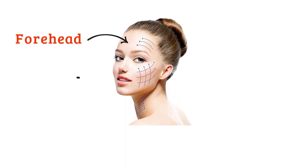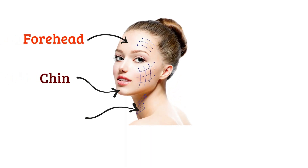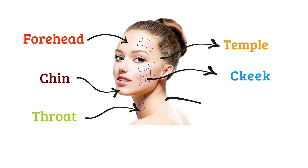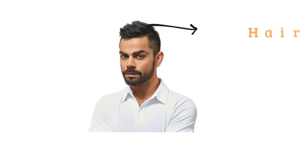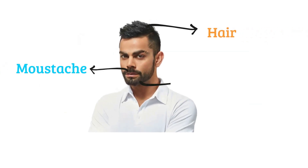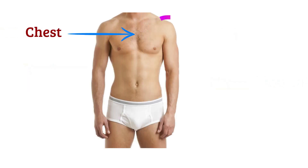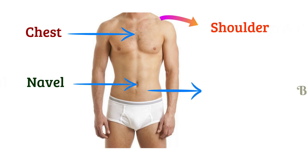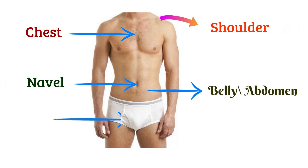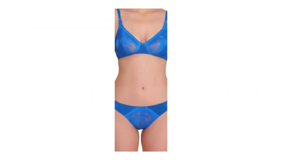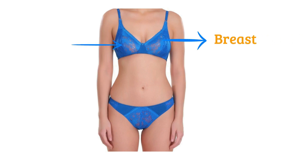Forehead, chin, throat, temple, cheek, neck, hair, mustache, beard, chest, shoulder, navel, belly or abdomen, penis, scrotum, breast, nipple, waist.